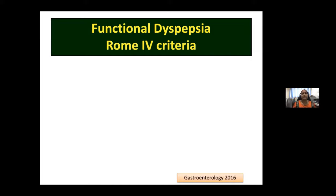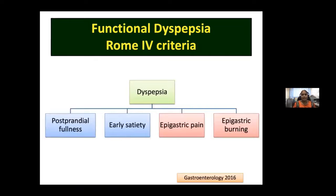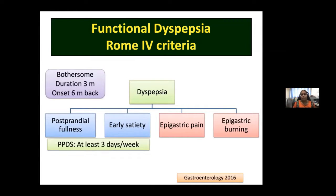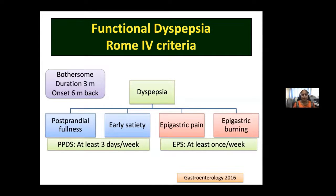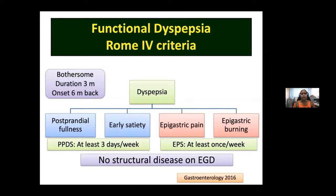For the Rome 4 criteria for functional dyspepsia: symptoms are classified as epigastric pain syndrome or postprandial distress syndrome. They must be bothersome — affecting daily activity — of concern to the patient, with a minimum duration of three months and onset at least six months prior. In postprandial distress syndrome, symptoms must be present at least three days per week in the form of postprandial fullness or early satiety. Epigastric pain syndrome qualifies with symptoms even once a week.